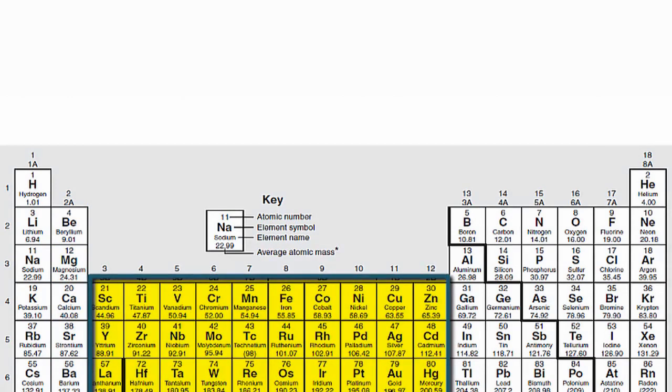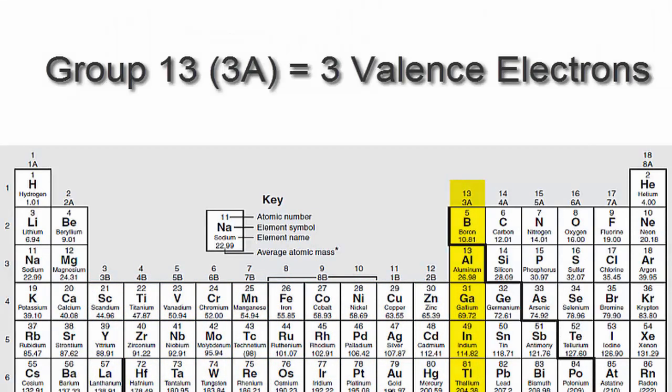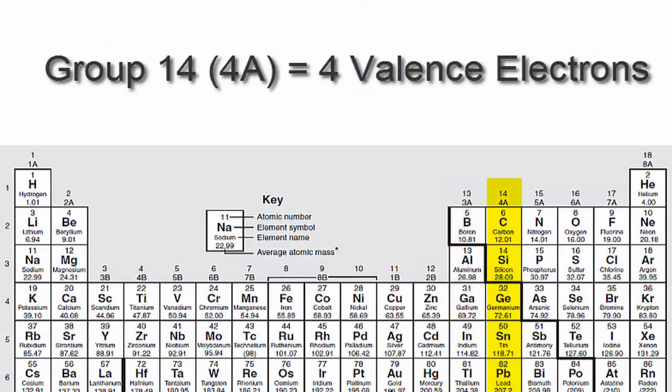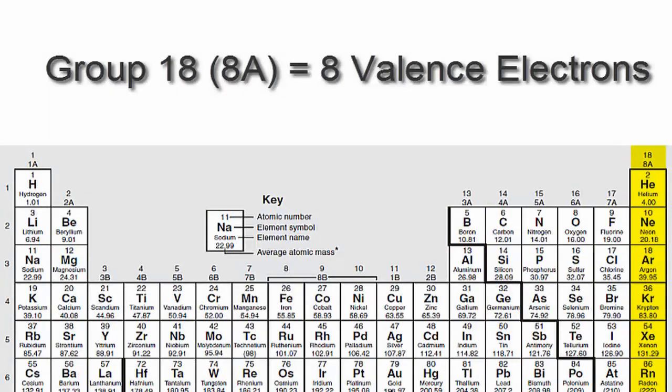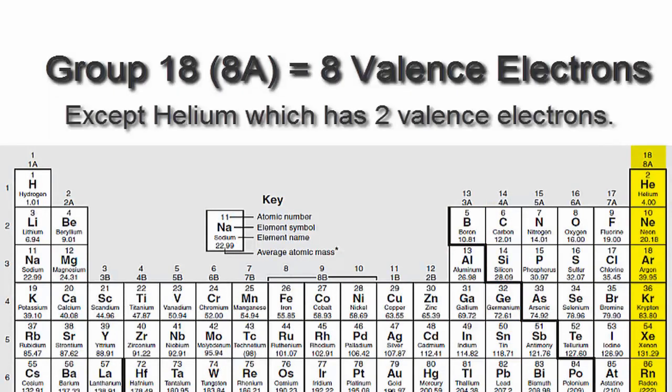We'll skip over the transition metals, since they're a bit more complicated and probably don't apply to you. We'll go to 13 or 3A, which have three valence electrons, then 14 or 4A. Each of those elements in group 14 or 4A have four valence electrons, all the way up to group 18 or 8A, which have eight valence electrons.